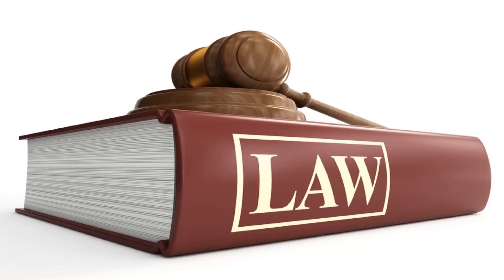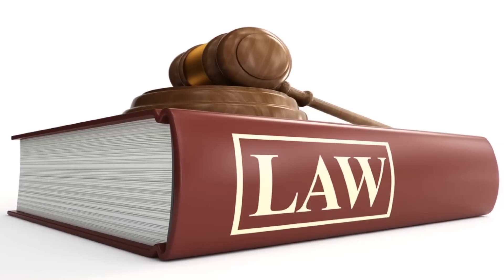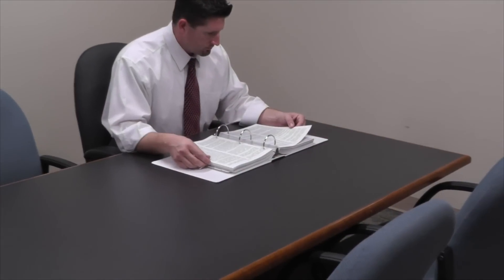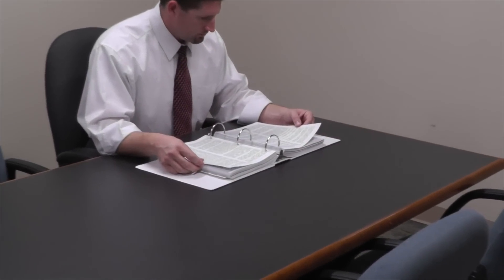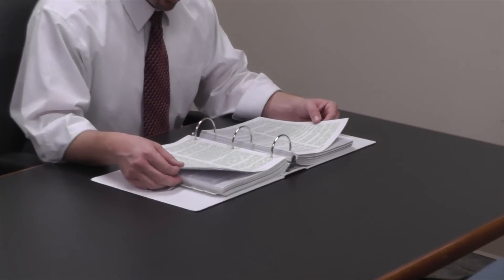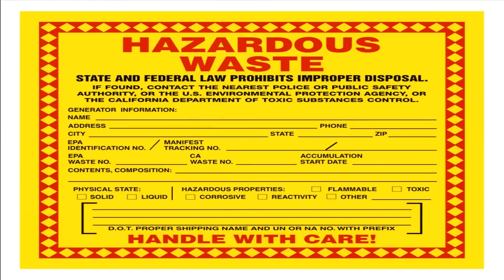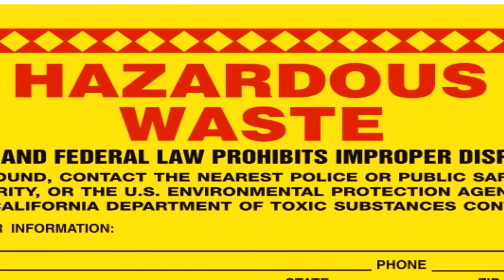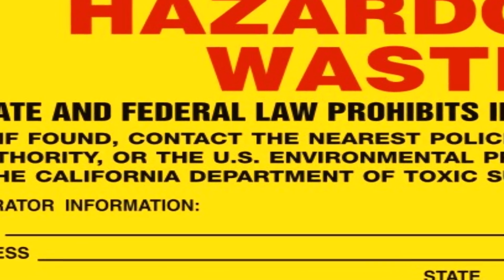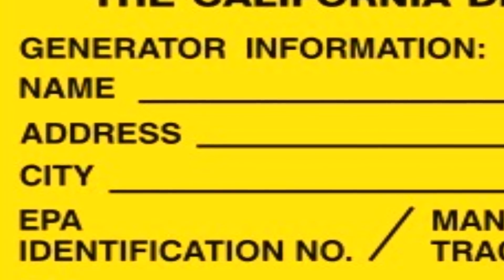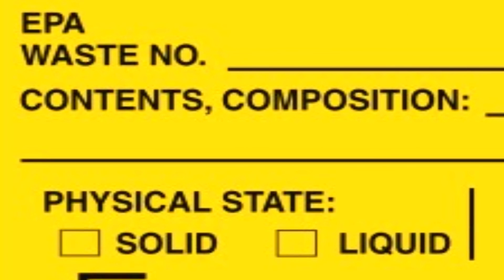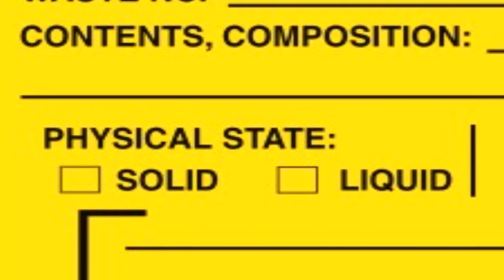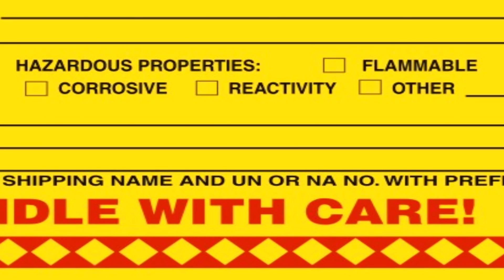Hazardous waste management regulations require that the hazardous waste label on the container includes certain information. The label must clearly state the words 'hazardous waste.' It must also include the generator name and address, composition and physical state of the waste, hazardous properties of the waste, and the waste accumulation start date.